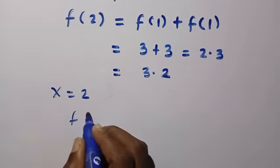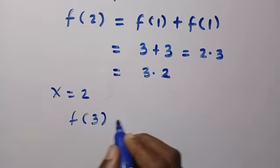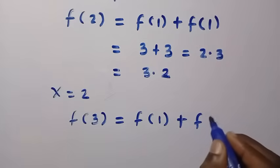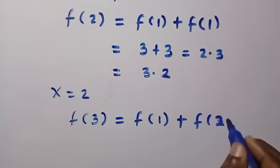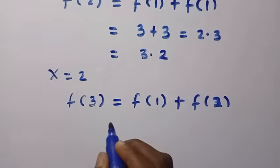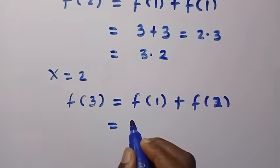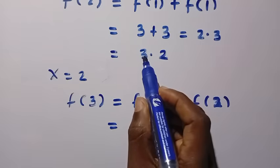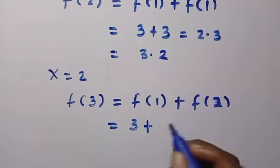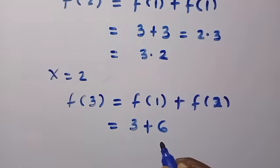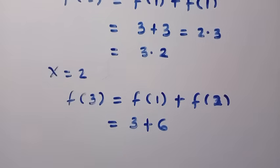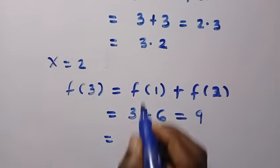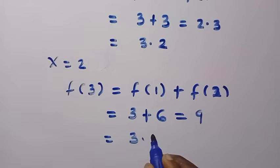For x = 2, we get f(3) = f(1) + f(2). Here f(1) = 3, and f(2) = 3 × 2 = 6. So f(3) = 3 + 6 = 9, and 9 can also be written as 3 multiplied by 3.